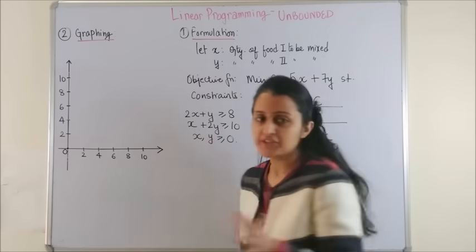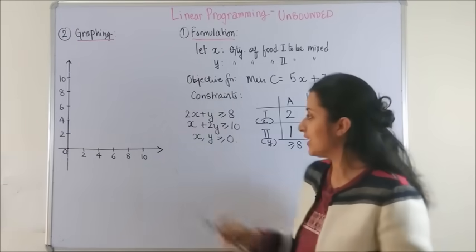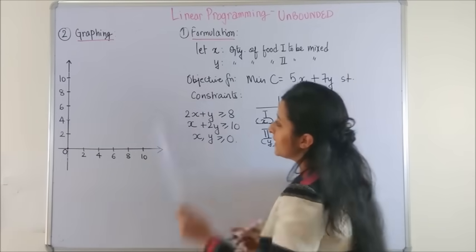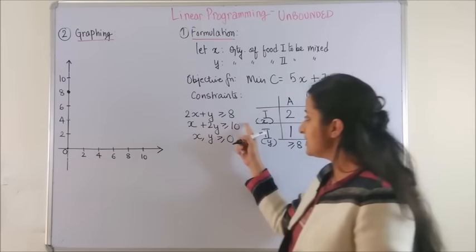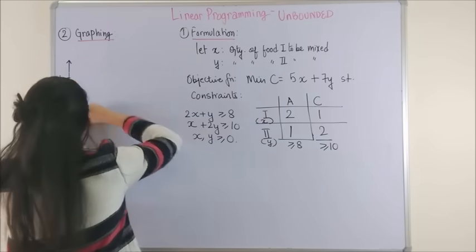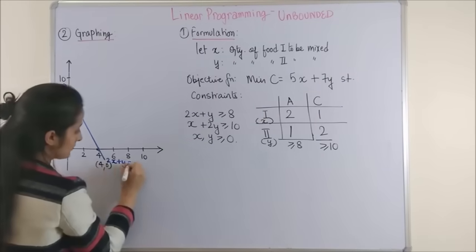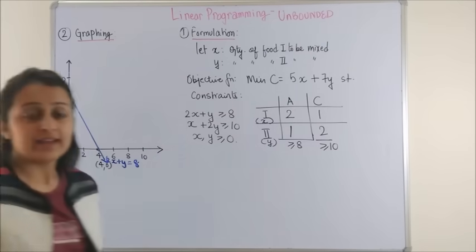Now, step number 2, which is graphing, involves putting these constraints on the graph. So, when x is 0, y is 8. So one of the points is (0,8). Next, when y is 0, x would be 4. So next point is (4,0). We have joined the line and labelled it.